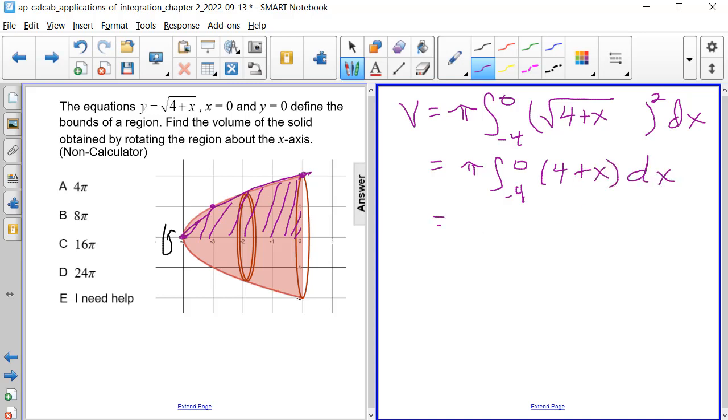And then if we integrate, we still have the pi outside, we're going to have 4x plus x squared over 2. And we're going to evaluate from negative 4 to 0.